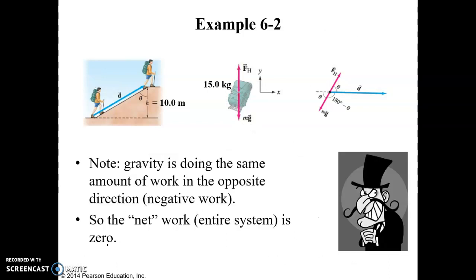And so in this slide, that just summarizes what I just said. Gravity is doing the same amount of work in the opposite direction. It's doing negative work. And so those things cancel out. The net work on the system is, in fact, zero.